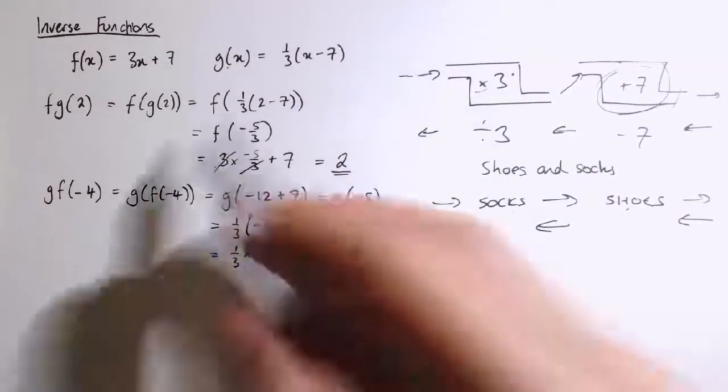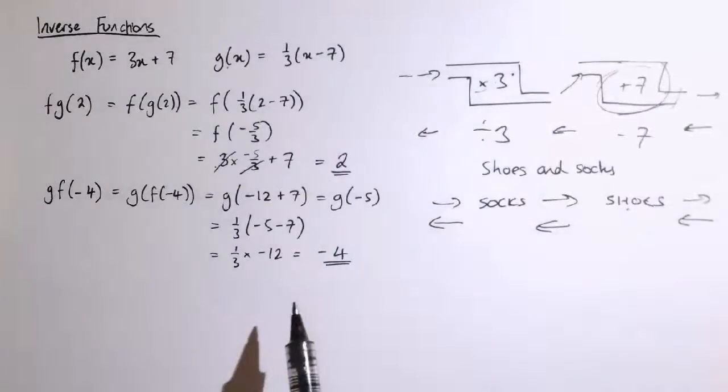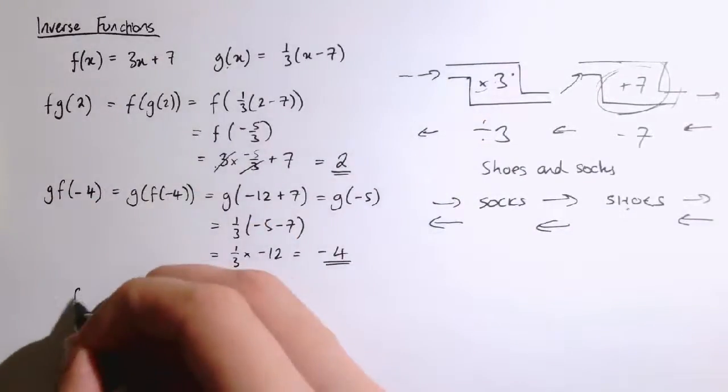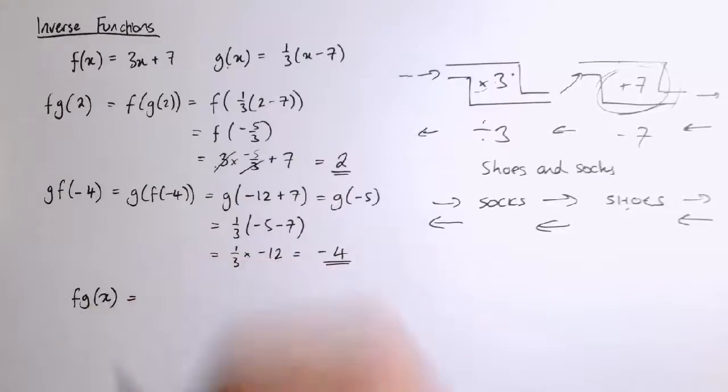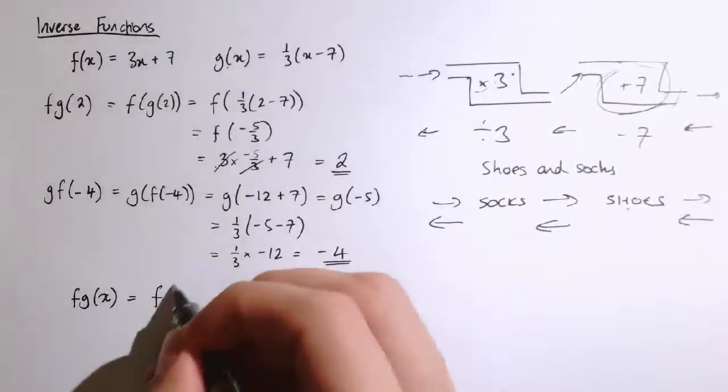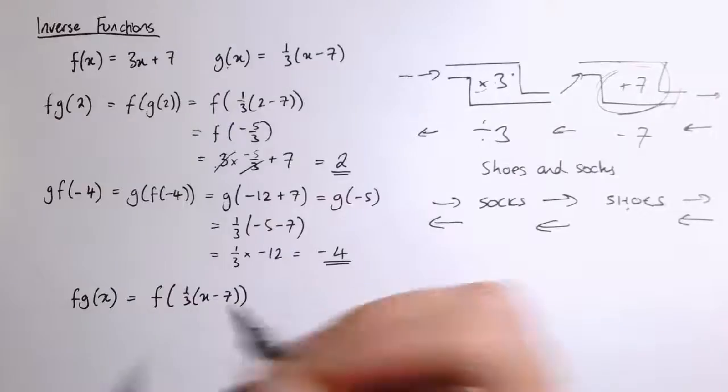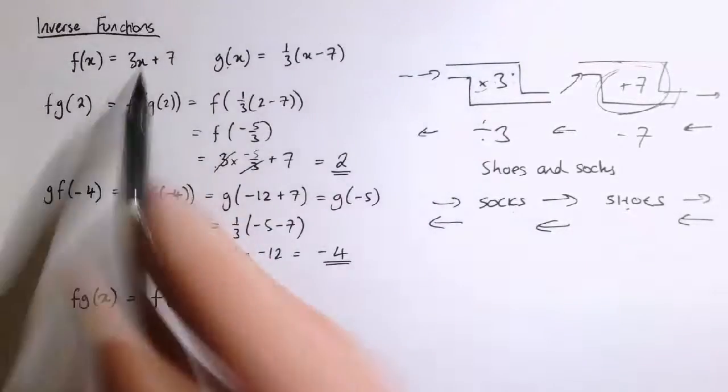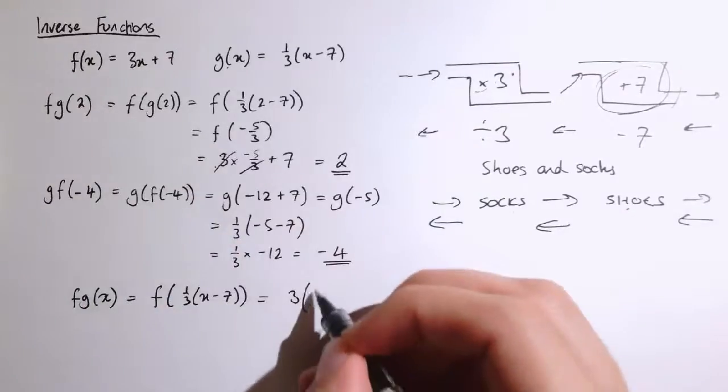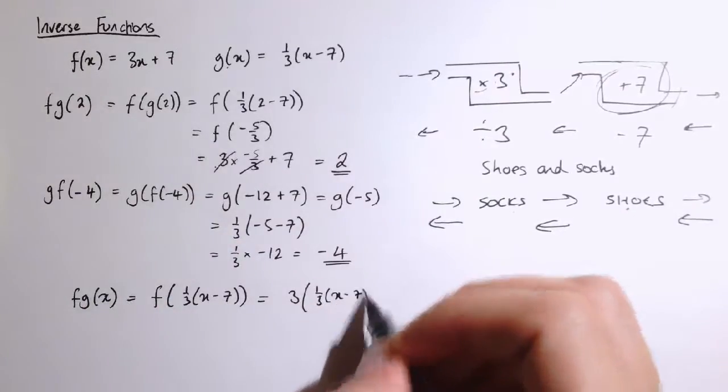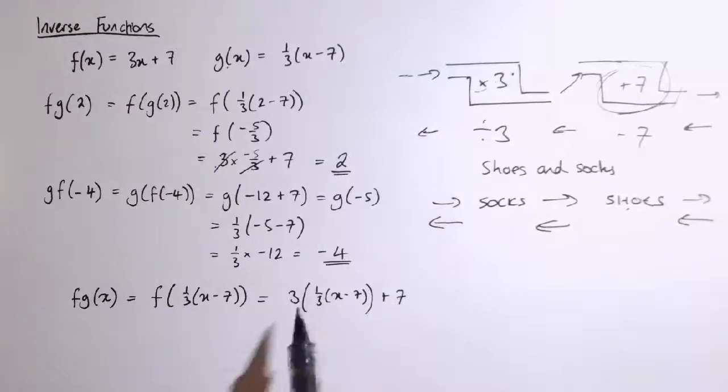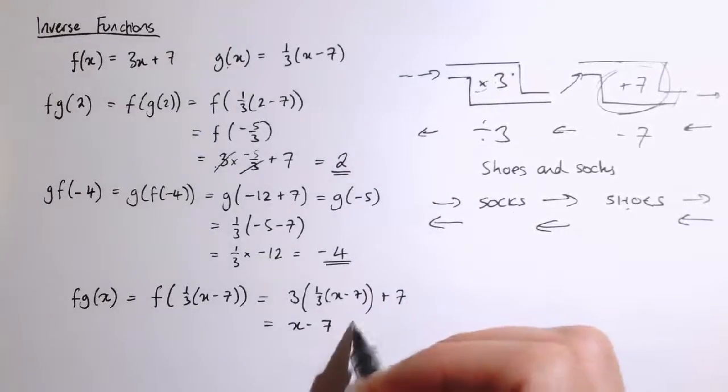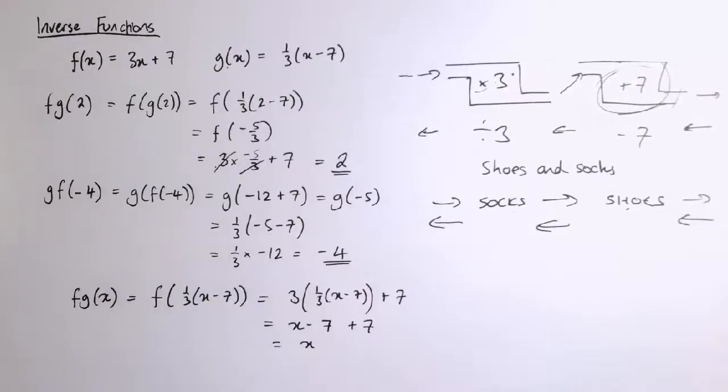So to undo a composition of functions, we do it in the opposite order there. We can also check that these really are inverses by looking at what's f of g of x in general. Well, that would be f of one-third x minus 7, and so replacing one-third x minus 7 with x in here, we get 3 times one-third x minus 7 plus 7, so the 3 and the thirds cancel out, we get x minus 7 plus 7, which is x.